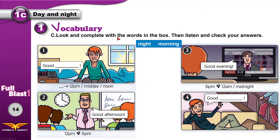Now look and complete with the words in the box, then listen and check your answers. It's 7:45 in the morning — we say good morning. It's 4 p.m. — the teacher says good afternoon, class. The anchor is reading the news at 9:15 — a quarter past nine — so he says good evening. Somebody is going to bed, so he says good night.